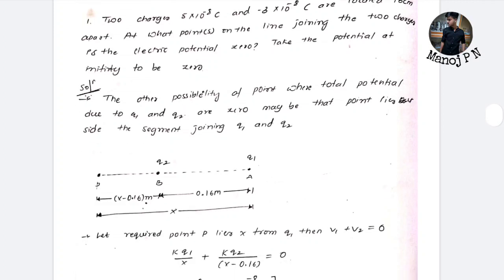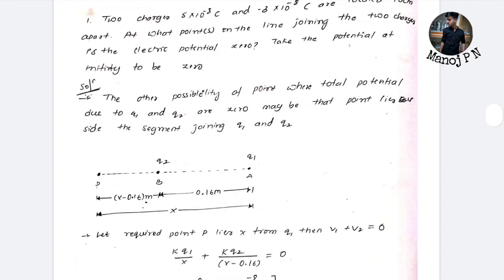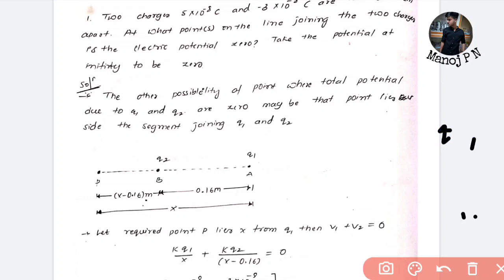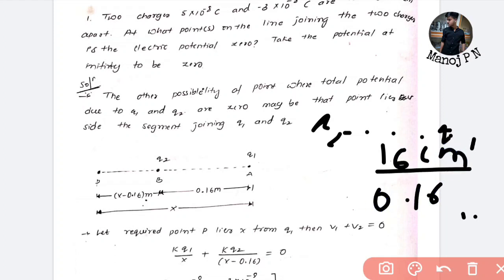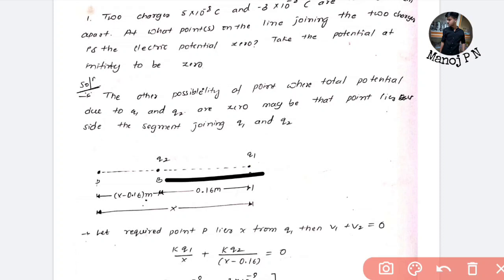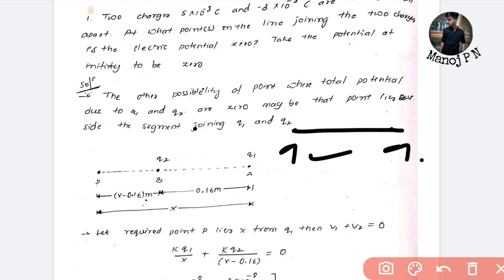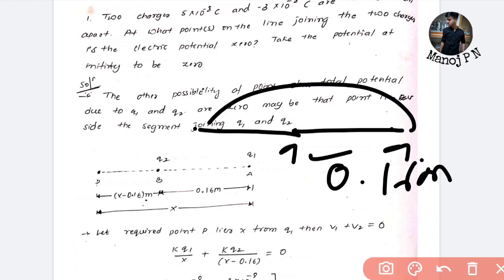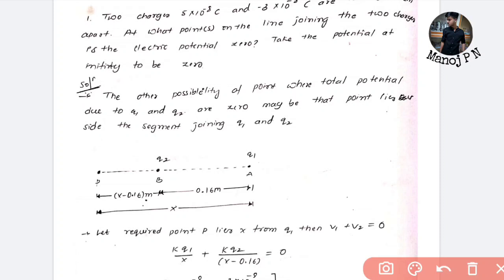Let me tell you the exact concept. We have two charges — this is Q1 and another charge is Q2. They have mentioned that they are 16 cm apart, so the distance between Q1 and Q2 is 16 cm; if you convert this to meters, that is 0.16 meter. Now, there is some point P where the electric potential of Q1 and Q2 will become zero, so we will have to find out point P. The distance between Q1 and P we don't know, so that is why I am taking it as X.